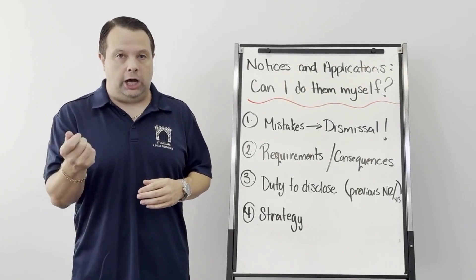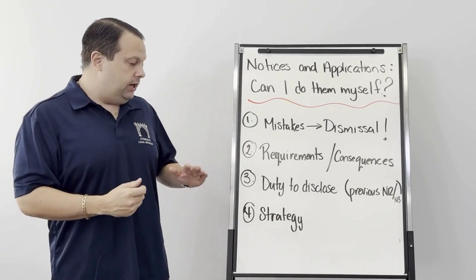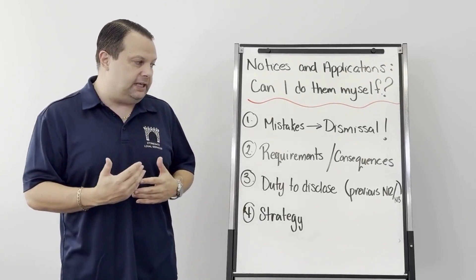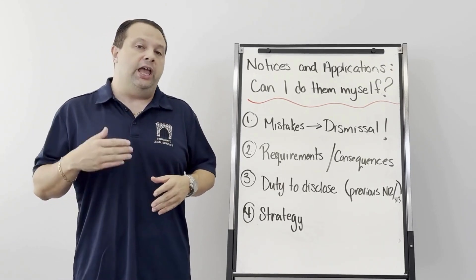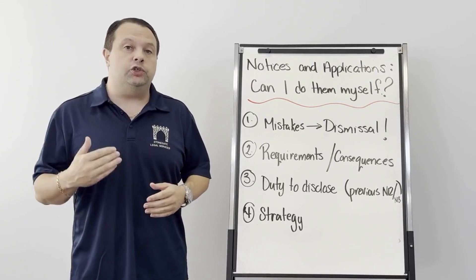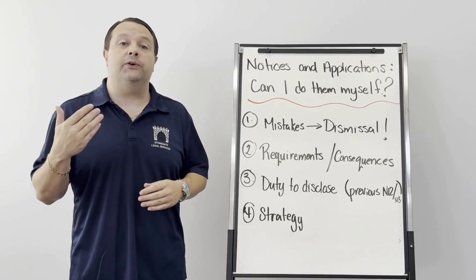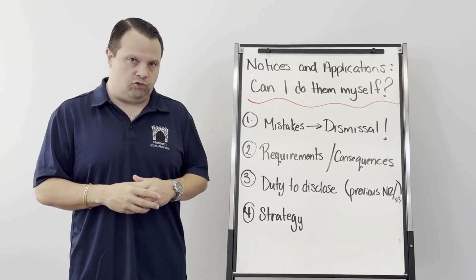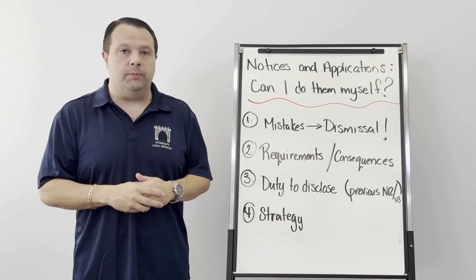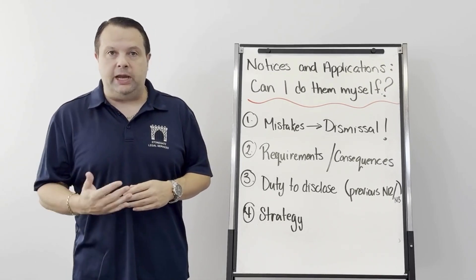Number three, is a duty to disclose. Again, going back to the N-12 or an N-13, if you've given a previous notice, it's your duty to disclose to the board that there has been a previous N-12 or N-13. Or again, you're risking waiting to go to the board and on a preliminary, the board may dismiss your matter and you have to restart the process again.